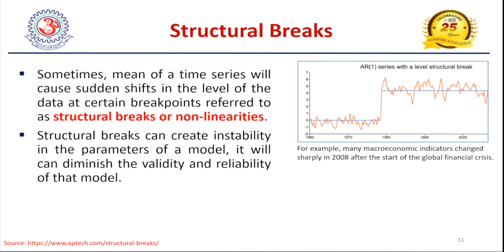Sometimes time series will cause a sudden shift to the mean value — a sudden shift in the level of data at certain break points, referred to as structural breaks or non-linearities. In this example, after 1960, the microeconomics indicator changes sharply around 2000, jumping to a higher level mean value. If you consider the data only up to 1980 for analysis or forecasting, you would need to split the model into two variants — one up to 1980 and one after 1980 — to get a correct result, otherwise you cannot derive a perfect result.